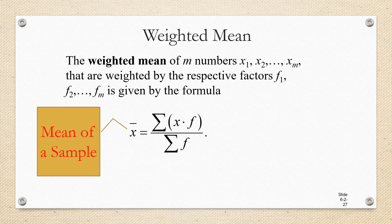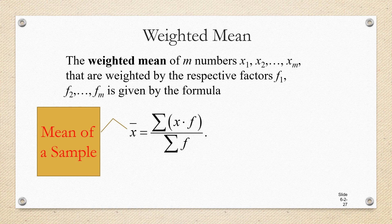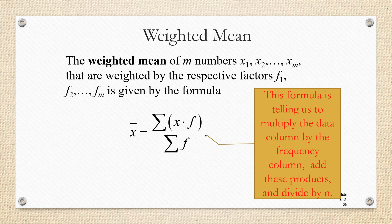So the weighted mean of m numbers, x1, x2 through xm, that are weighted by respective factors, in other words, frequencies, f1, f2 through fm, is given by the formula x bar, the mean of the sample, equals the sum of the xf's over the sum of the frequencies.